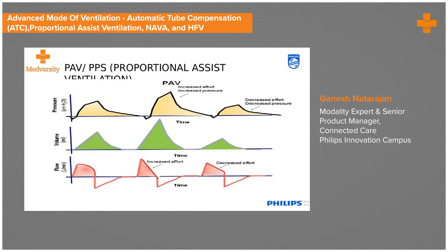As we understand ventilation using graphs, you can see that with increased patient effort, the machine automatically increases volume support to meet the patient's volume requirements. This is completely inverse to conventional ventilation — in conventional ventilation, if the patient makes an effort, the machine reduces its effort. But in PAV, for higher patient effort, there is higher support by the machine, and for lower patient effort, there is lower support by the equipment.